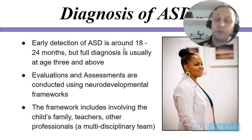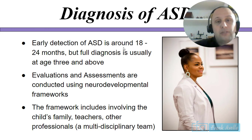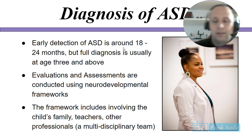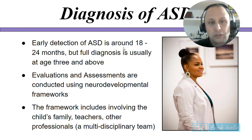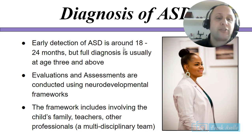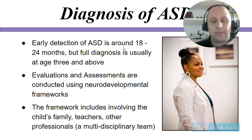Early detection of ASD is at 18 to 24 months, but full diagnosis is usually at age three or above. Evaluations and assessments are conducted using neurodevelopmental frameworks that include the child's family, teachers, and professionals — it's a multidisciplinary team, meaning you want to get as many people from different backgrounds involved as possible.